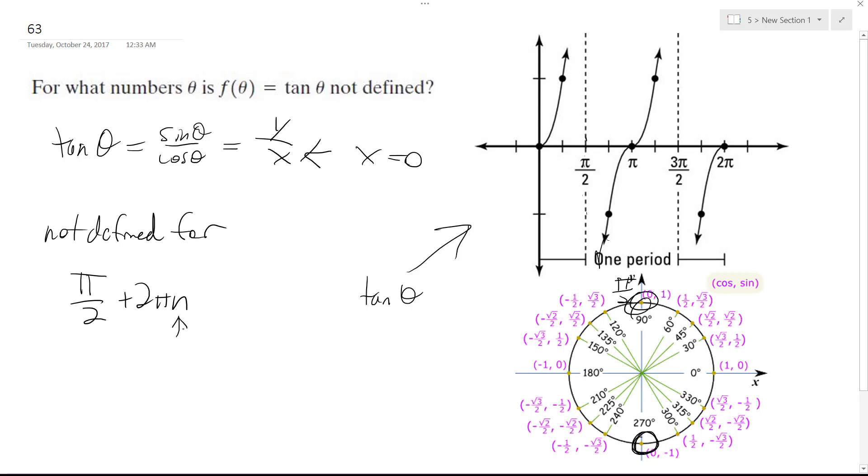That means n's an integer, so if it's zero, it's just π over two. If you plug in one, that's one loop around the circle, so that'd be like five π over two. And then three π over two plus two π n.